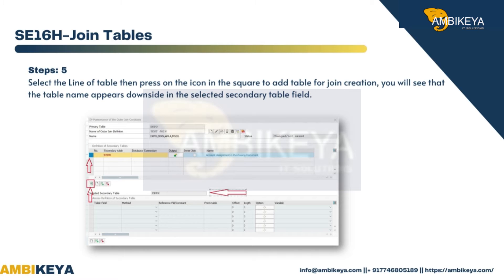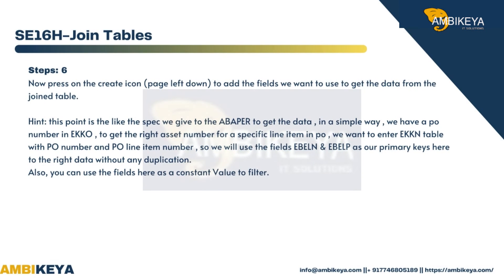Step 5: Select the line of the table, then press on the icon in the square to add a table for join creation. You will see that the table name appears at the bottom in the selected secondary table field. Step 6: Now press on the Create icon at the bottom left to add the fields we want to use to get data from the join table.